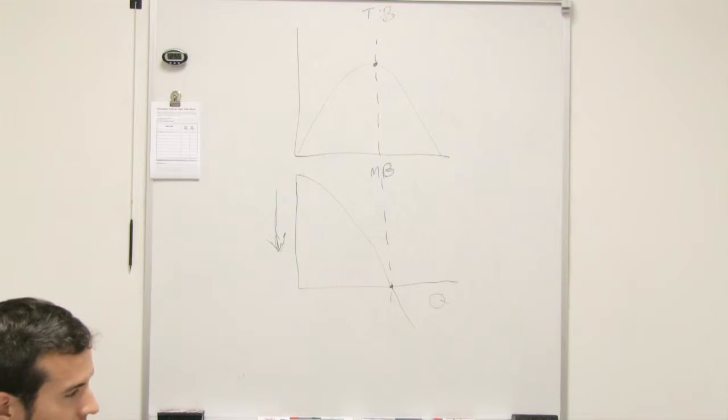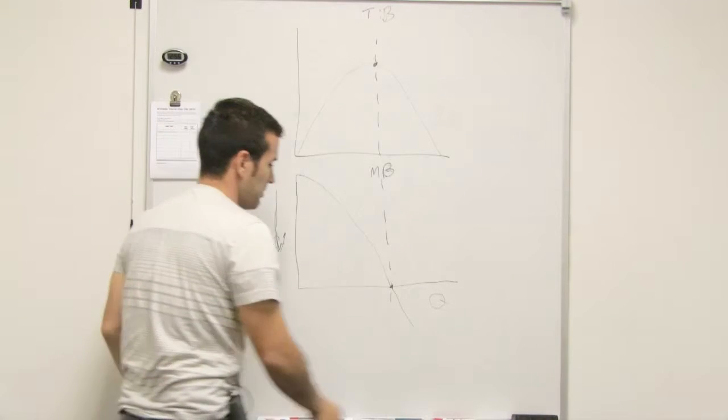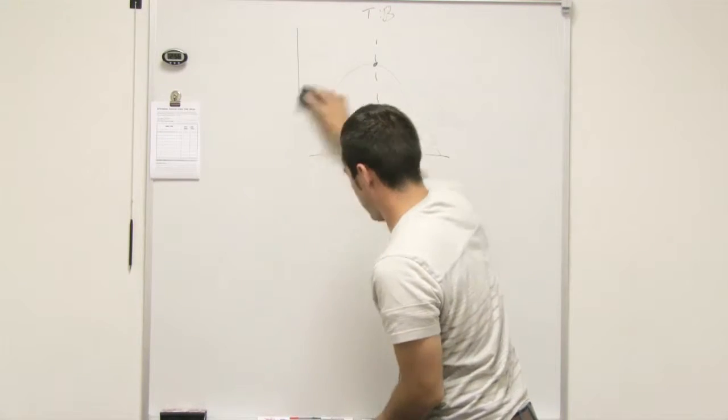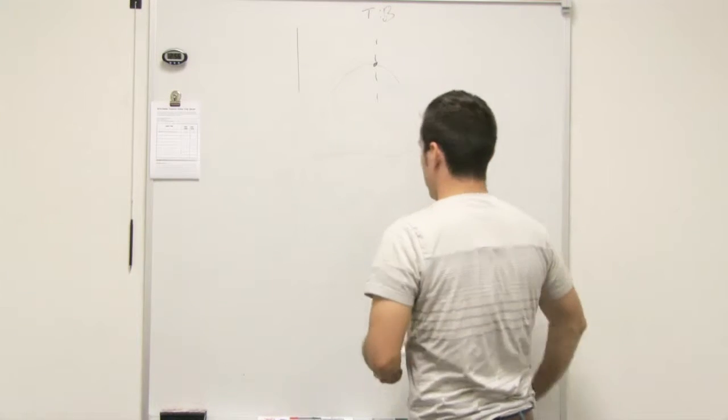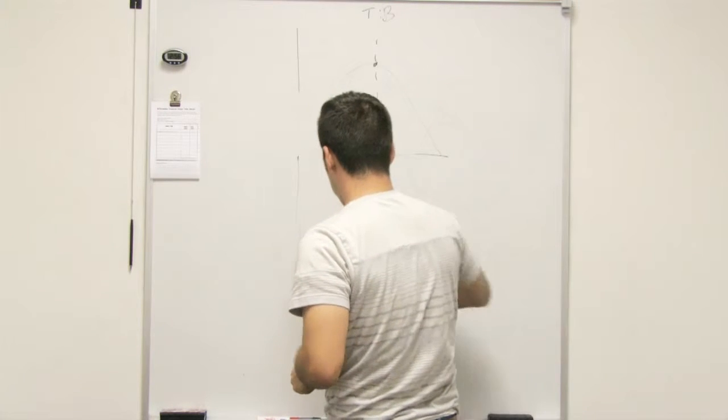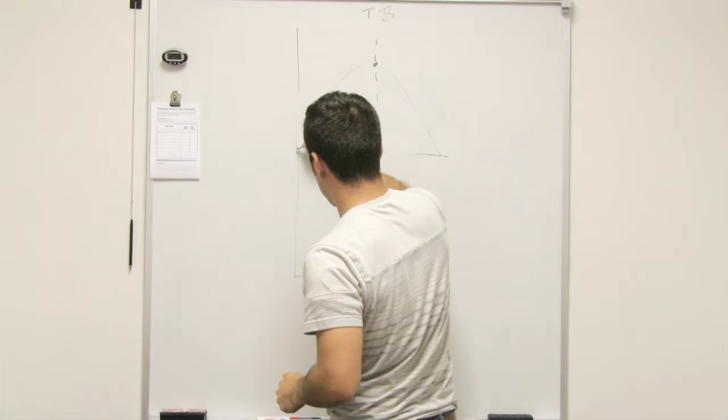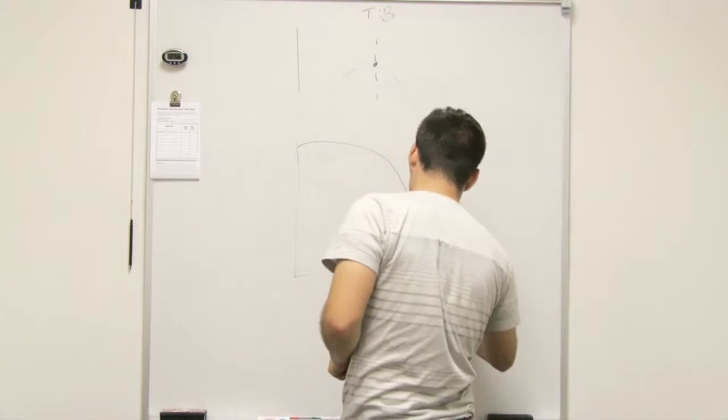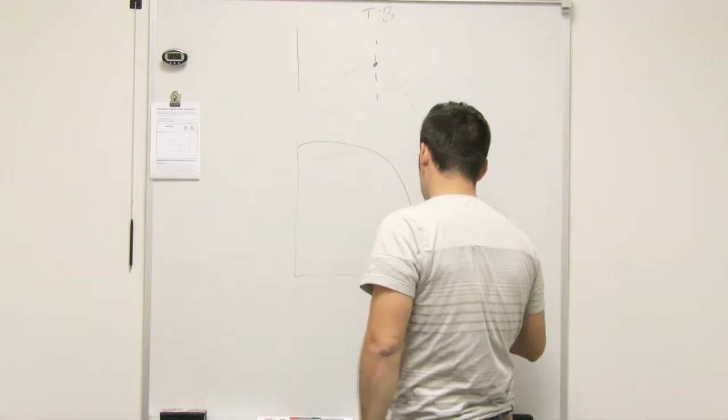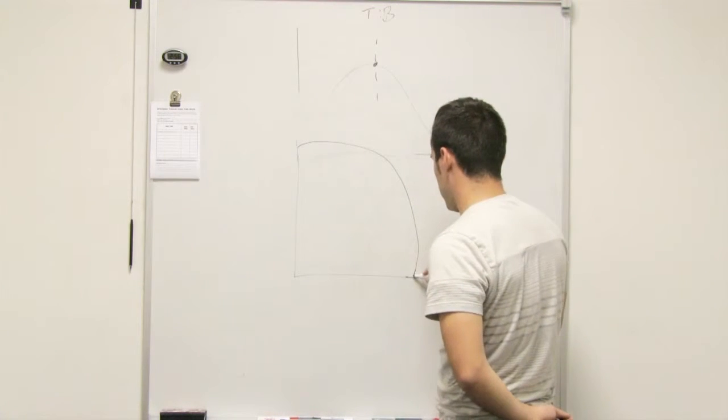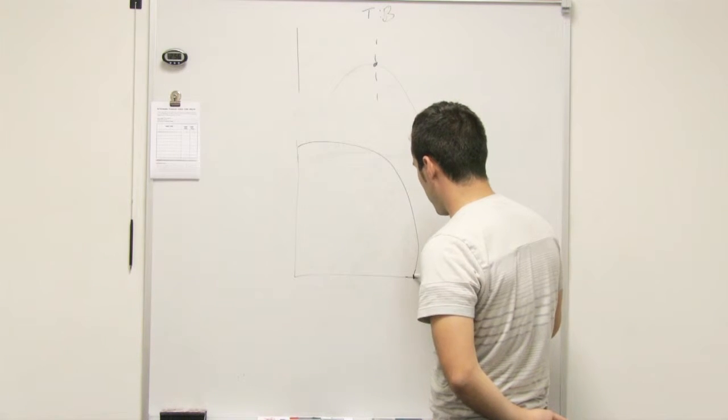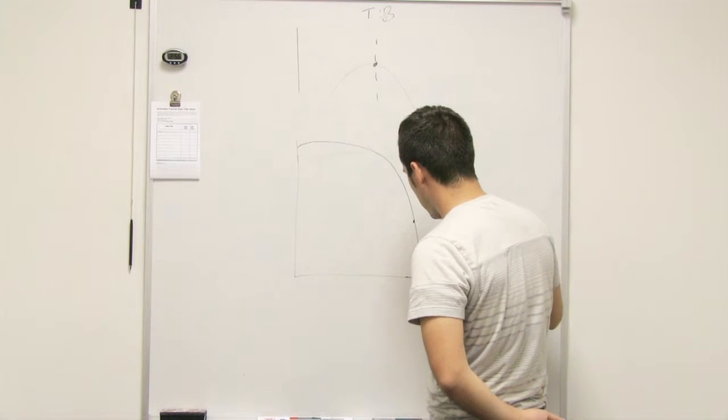All right, so we saw that in the production possibilities curve. There's a curve here like this, maybe, right? And so we're saying maybe to go from this point right here to this point.